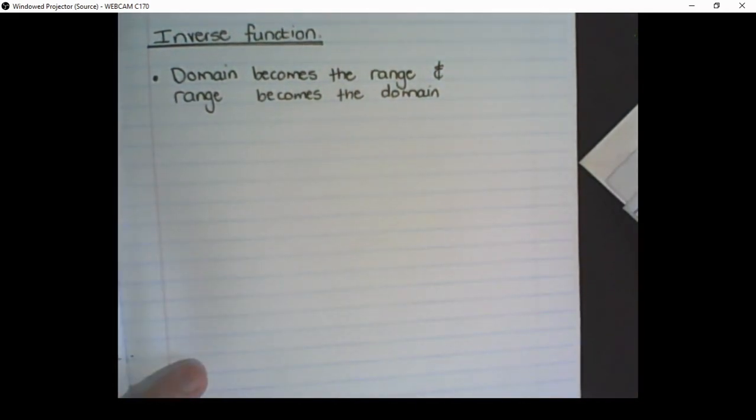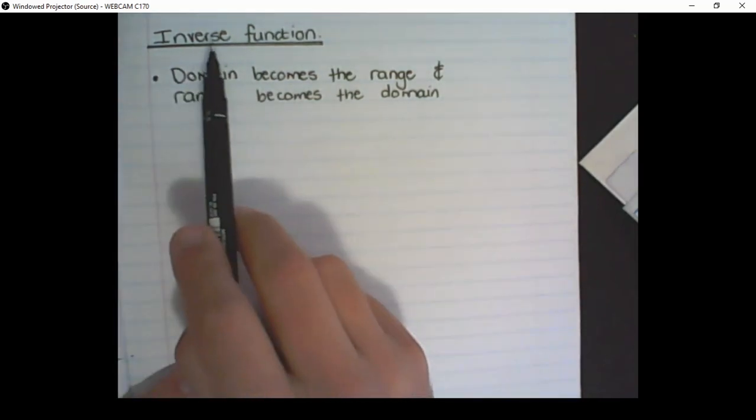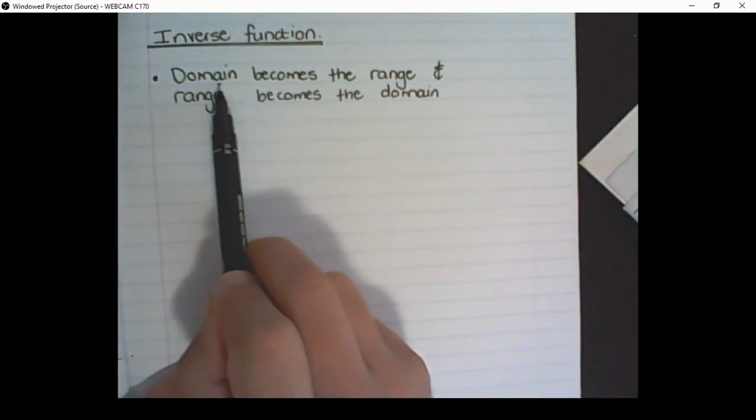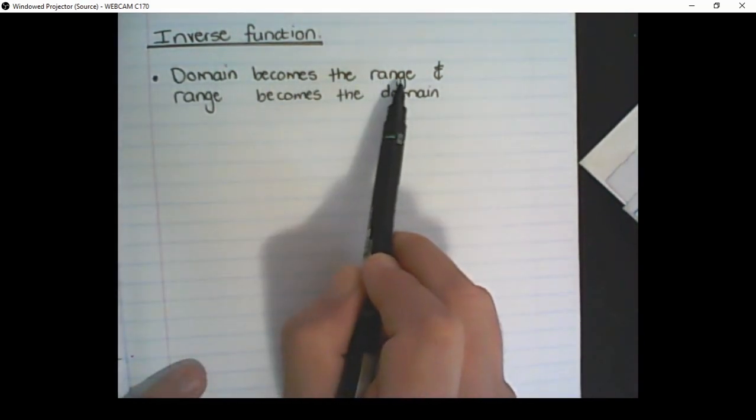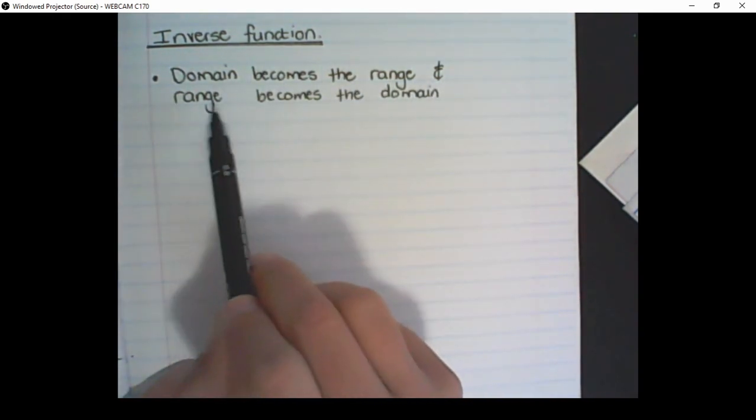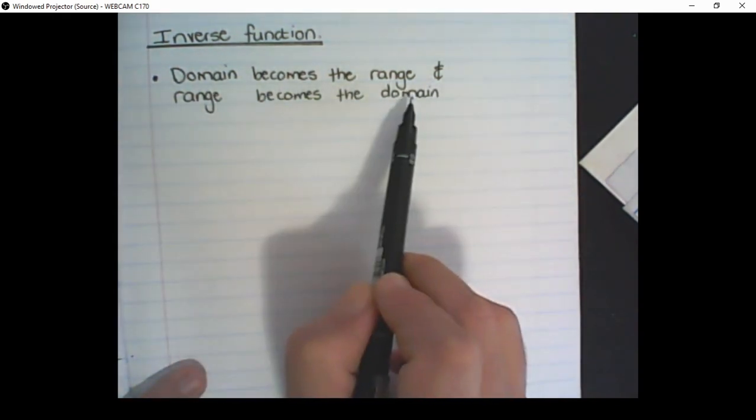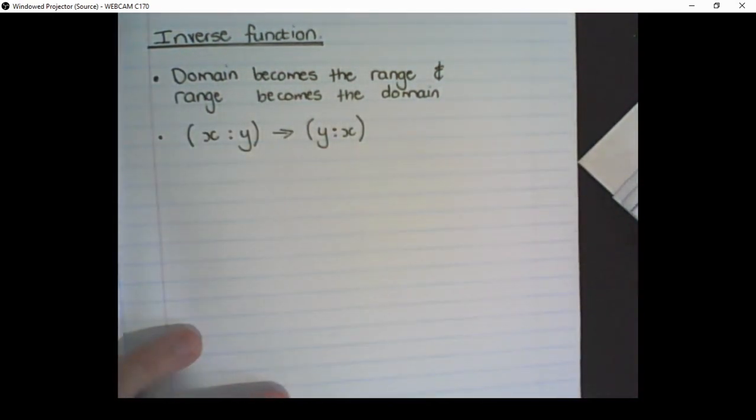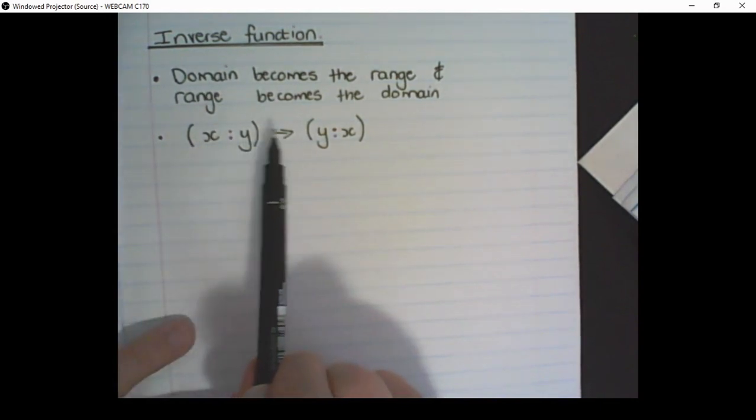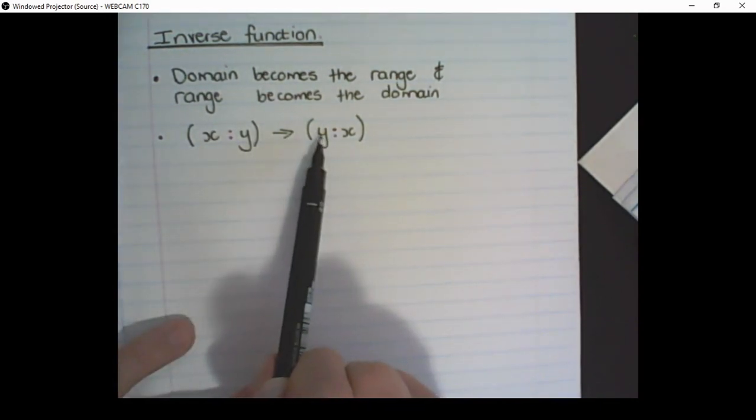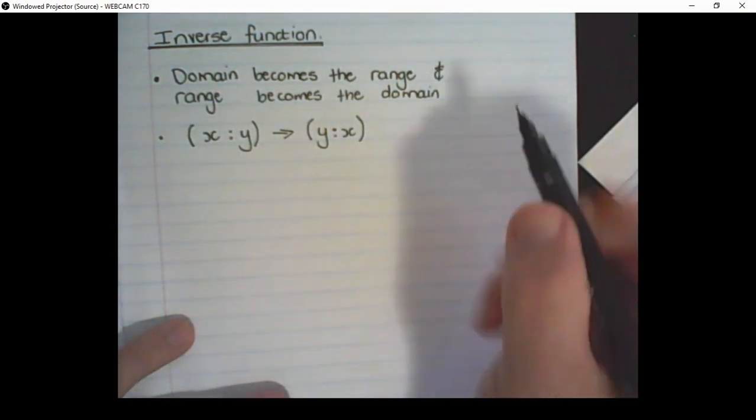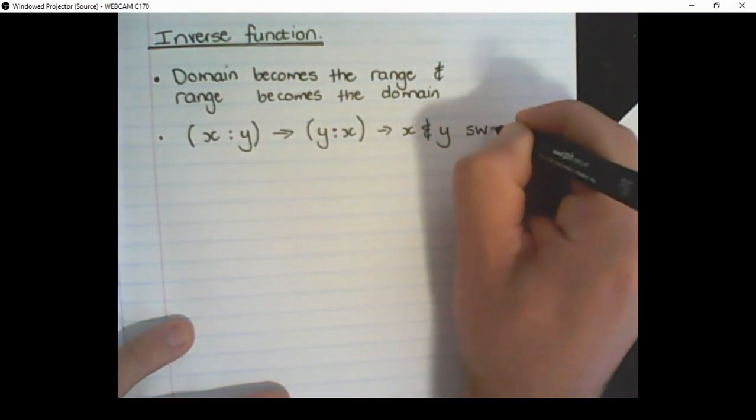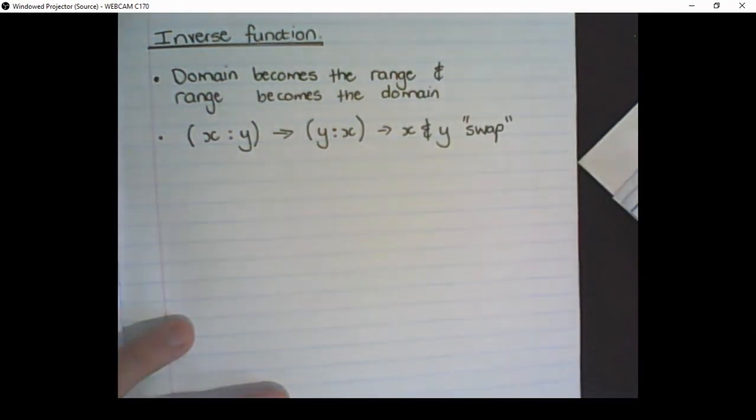Now that we have identified what a function is, we can move on to the inverse function. The basic definition of an inverse function is the domain, all the x-values, becomes the range. And the range, all the y-values, becomes the domain. If we think of it in terms of coordinates, the x-value becomes the y-value, and the y-value becomes the x-value. So the x- and y-values swap. They change positions.